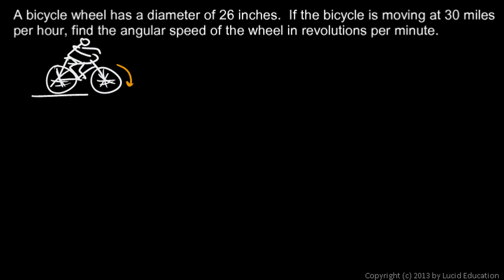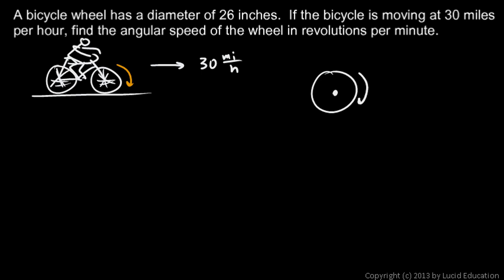Think about this: the bicycle is moving forward at 30 miles per hour. You could also think of it as the bicycle being still and the road zipping by at 30 miles per hour. The road contacts the wheel, presumably without slipping, right down at the bottom. So if you picture the bike as still and the wheel is just turning, it's turning such that a point on the rim is moving at a linear speed relative to the center of 30 miles an hour.